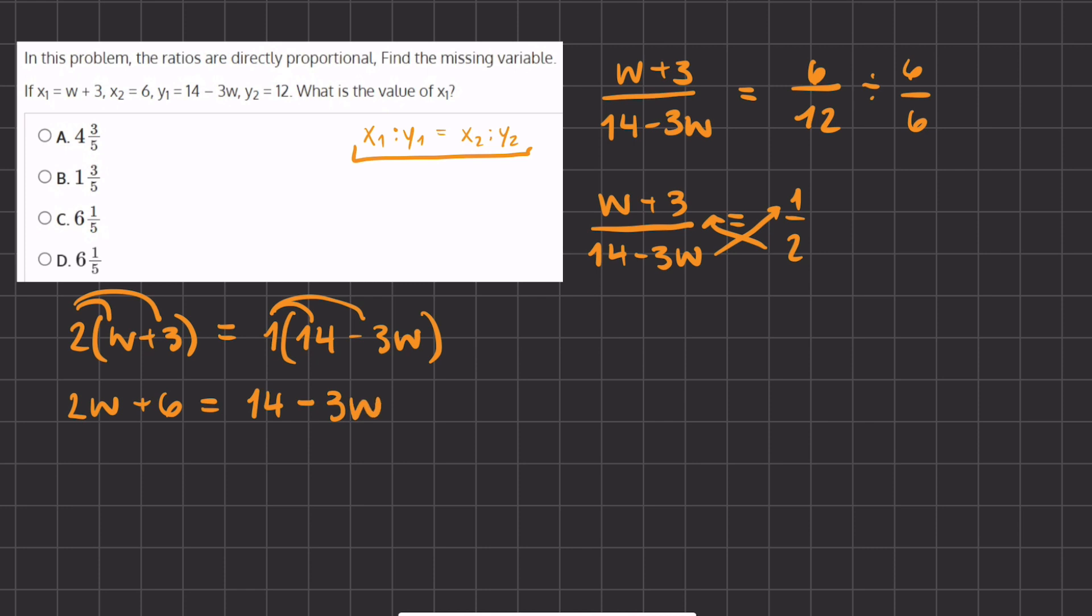Now we can combine like terms. We'll move all of the variables to one side and all of the numbers to the other. Now we are left with 5w equals 8.